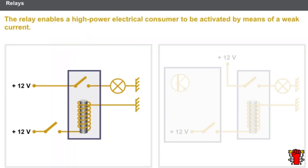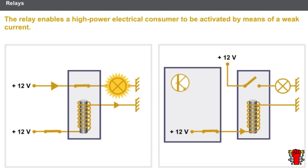Another type of actuator is the relay. The relay enables a high-power electrical consumer to be activated by means of a weak current. The control circuit can be activated either by a manual switch or by a computer.